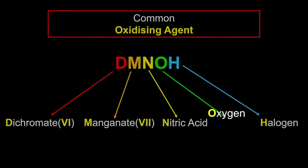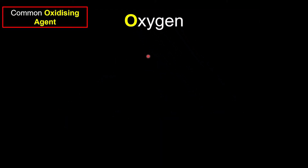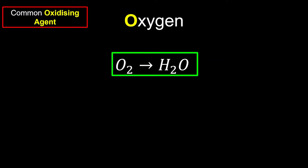Now we're going to look at how oxygen can oxidize other substances. Meanwhile, it undergoes the process of reduction. They tell us that oxygen will be reduced to become water. This is our general idea and we're going to balance it like usual. At our right hand side we have more hydrogen, but on the left hand side we have no hydrogen at all.